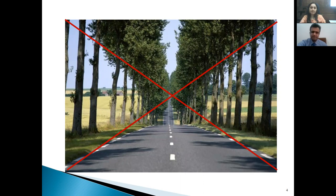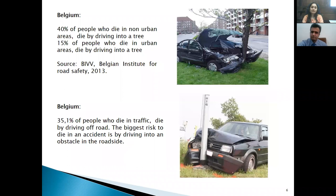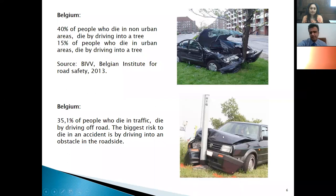Driving on such roads, we have to reduce speed as much as possible and keep our eyes on the road. Stiff objects right beside the road present a huge risk to vehicles and their occupants. We see such accidents happening even in developed countries — in Belgium and others — where trees, poles, and other stiff objects cause severe damage to vehicles and occupants.